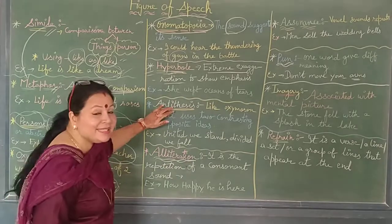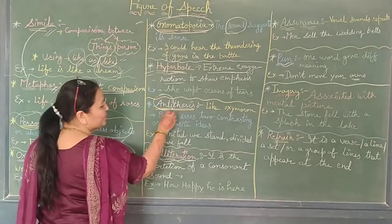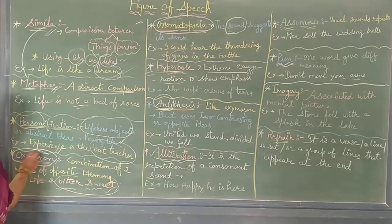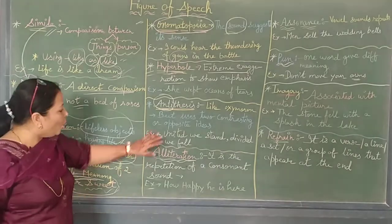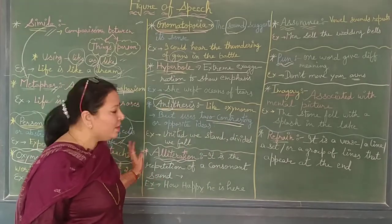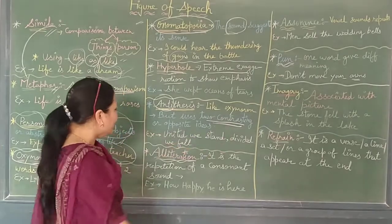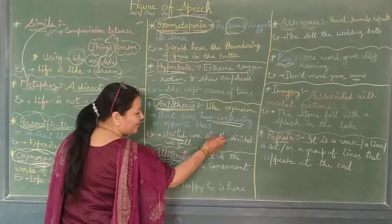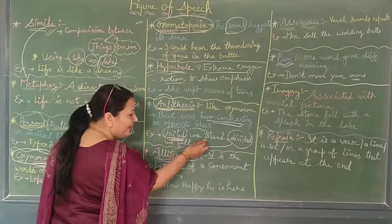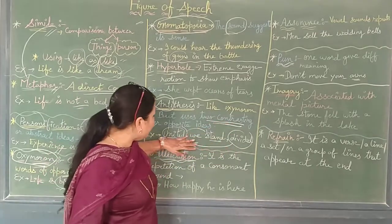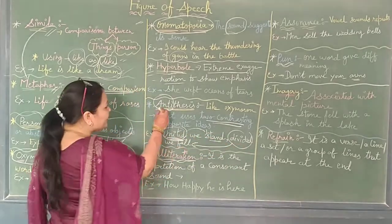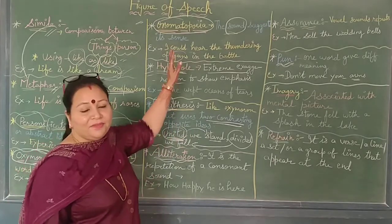Now we are talking about antithesis. 'Anti' means opposite. Antithesis is somewhat like oxymoron in that it also deals with opposite meanings, but here we are talking about contrasting ideas in a sentence. For example: 'United we stand, divided we fall.' Here there is a clear contrast — if you unite, you will stand; if you divide, you will fall. This type of contrasting sentence is called antithesis.